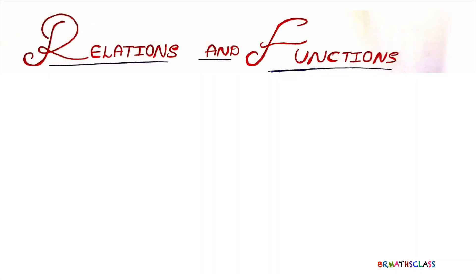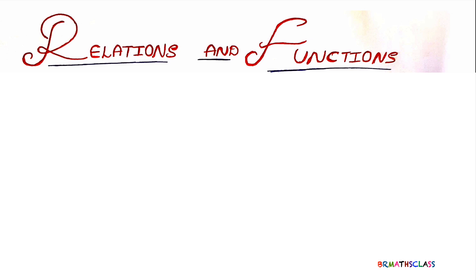Hi friends, I am Balaji Rao. Welcome to BRMAX class. This is the second chapter in the NCERT textbook of class 11. The chapter name is Relations and Functions. In this class we will learn the definition of Cartesian product of sets, how to calculate Cartesian product of sets with examples, and 5 important points related to Cartesian product of sets.